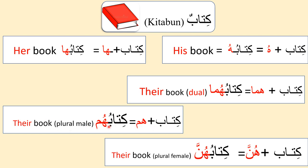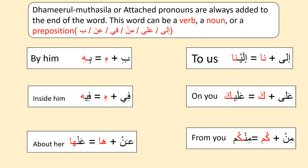Next is 'their book' but for plural. We know that in Arabic there are three forms: singular, dual, and plural. For male plural, we use 'hum' — kitabu-hum. For female plural, we use 'hunna' — kitabu-hunna. Dhamairul muttasila or attached pronouns are always added to the end of the word. This word can be a verb, a noun, or a preposition.